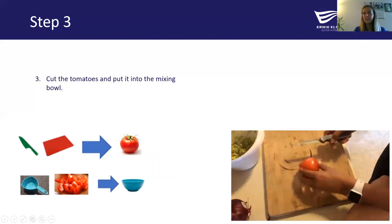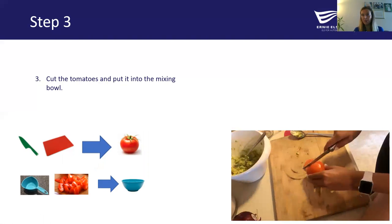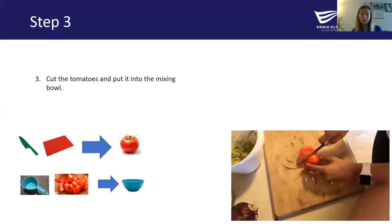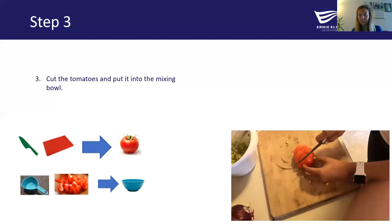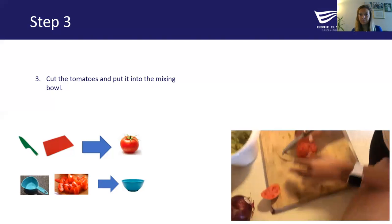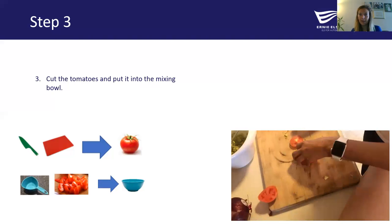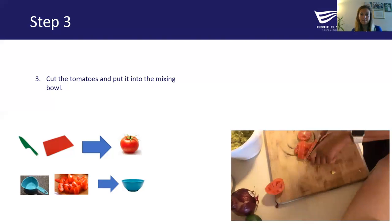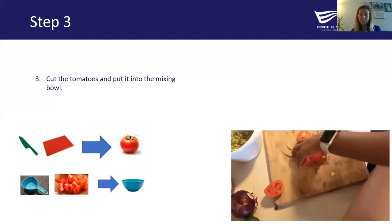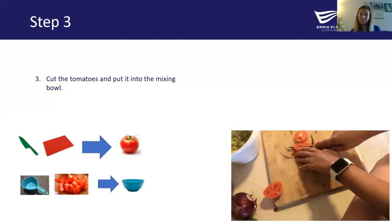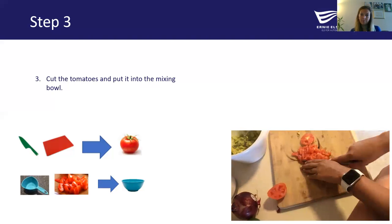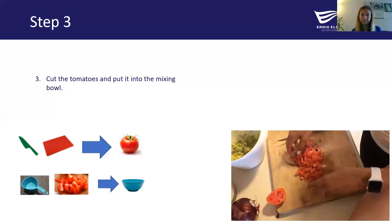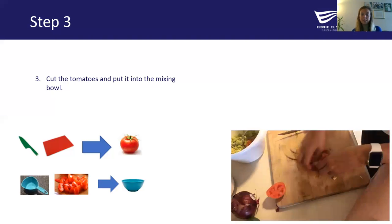Our next step is to cut the tomatoes and put them into the mixing bowl. Again, with the sharp knife I went ahead and cut and sliced the tomatoes. You want to measure about a cup — we just happened to have one tomato so that's what we used. I separated the ends and pulled them aside so they wouldn't be in the avocado mix, being mindful of where my fingers are as I'm using the knife. It's really important to be focused and not distracted when using sharp knives. Once they were all cut up, I put the tomato into the mixing bowl.